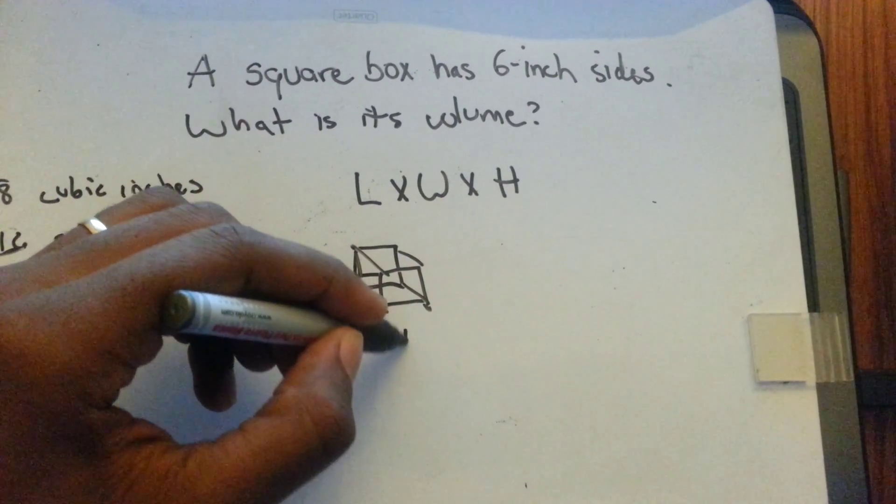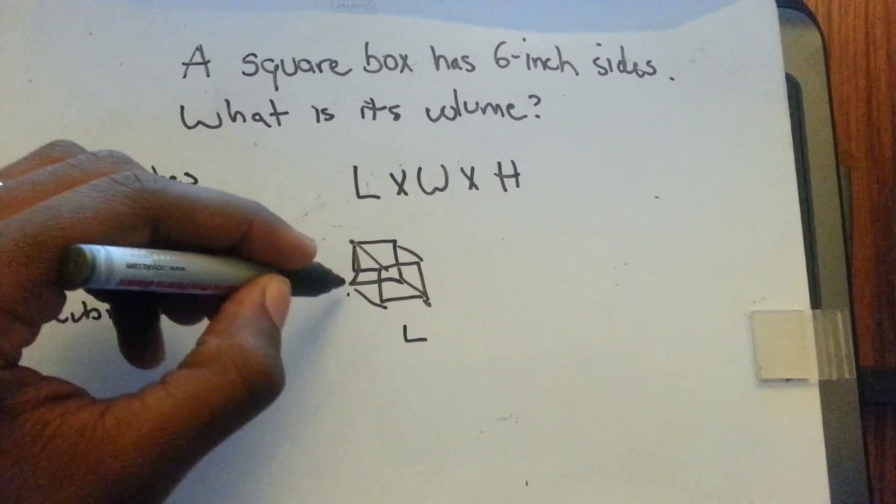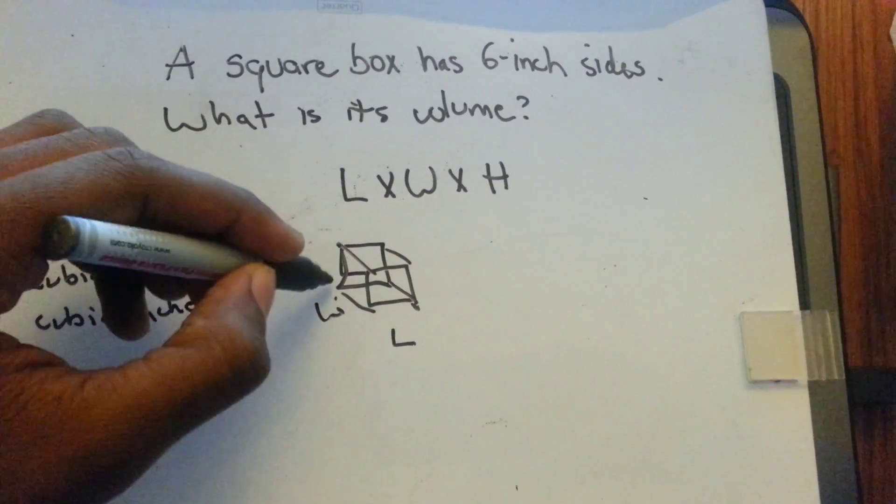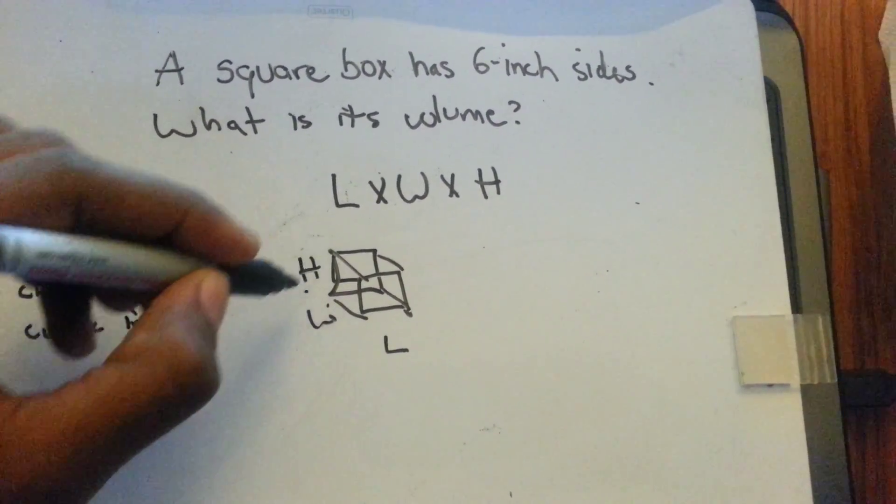The one side is the length, how wide it is is the other side, and then how high it is is the height.